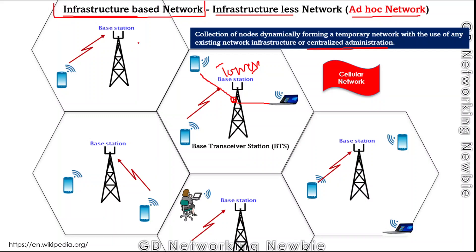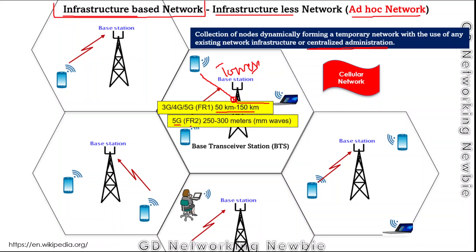That was one example of an infrastructure-based network where infrastructure supports communication between nodes. As a side note, the distance covered by a single tower or base station varies: for 3G/4G/5G using frequency range 1, coverage can be from 50 to 150 kilometers. For 5G using frequency range 2, the distance covered can be from 250 to 300 meters, using millimeter waves.